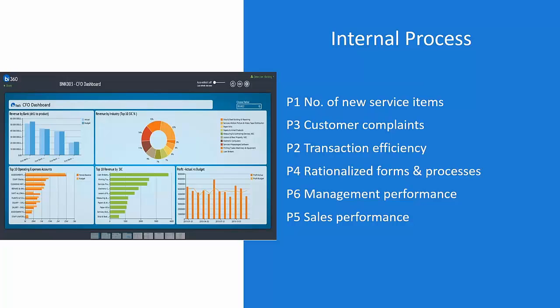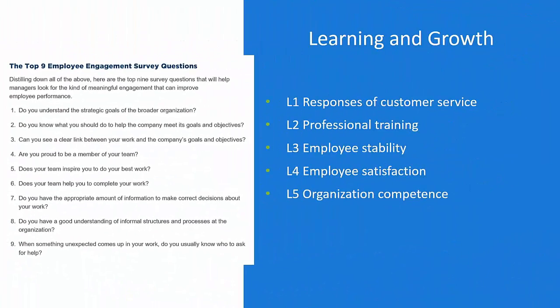Internal processes: number of new services, teller transactions per teller per hour or per day — is 100 transactions an hour good? You need to measure that. What are the number of loans per loan officer, and how many accounts can they properly manage? And lastly, how are your employees doing? What's the employee satisfaction? Are you holding them accountable to training? Are you tracking the number of hours employees take for training each year? Are there certifications, are they going to bankers school? You want to track that because you want improved performance on all four quadrants.